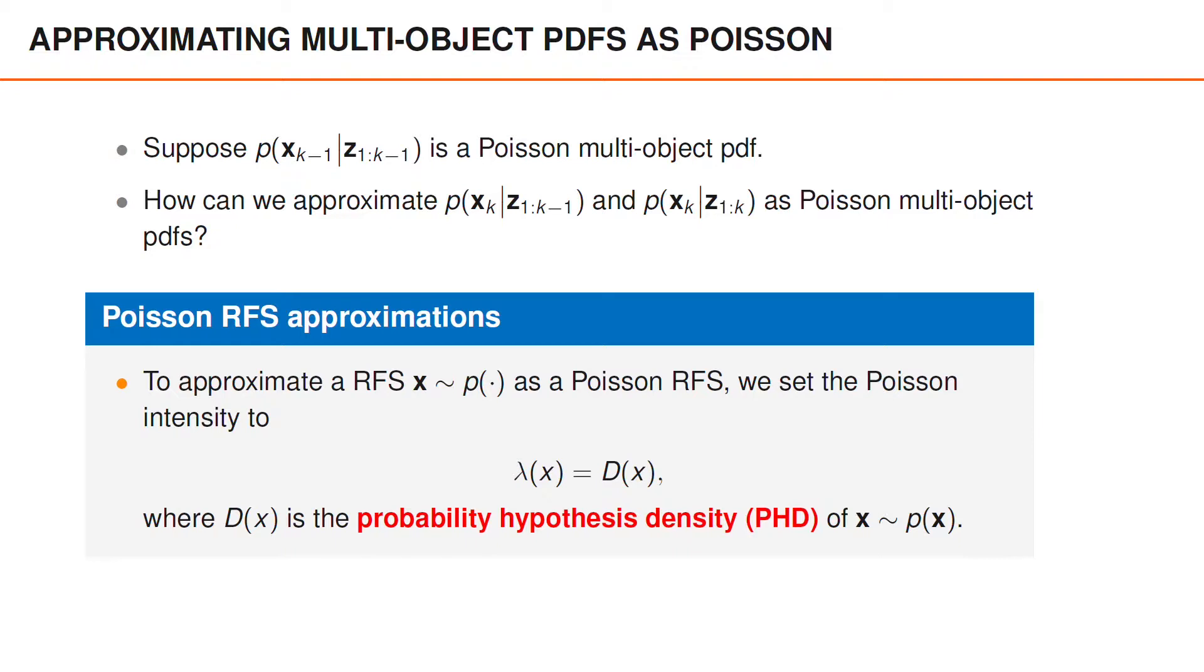We will introduce the PHD, D(x), more formally in the next video, but we note that it is a function of state vectors x, and we can compute the PHD for any random finite set. Importantly, we already have a principle for performing PHD filtering. After every prediction and update step, we compute the PHD of the new distribution and approximate the distribution as a Poisson point process with the PHD that we obtained as intensity function. An important argument for setting the intensity function of the approximating Poisson point process to the PHD of the original random finite set distribution is that this minimizes the Kullback-Leibler divergence. Unfortunately, I'm not going to prove that result here.